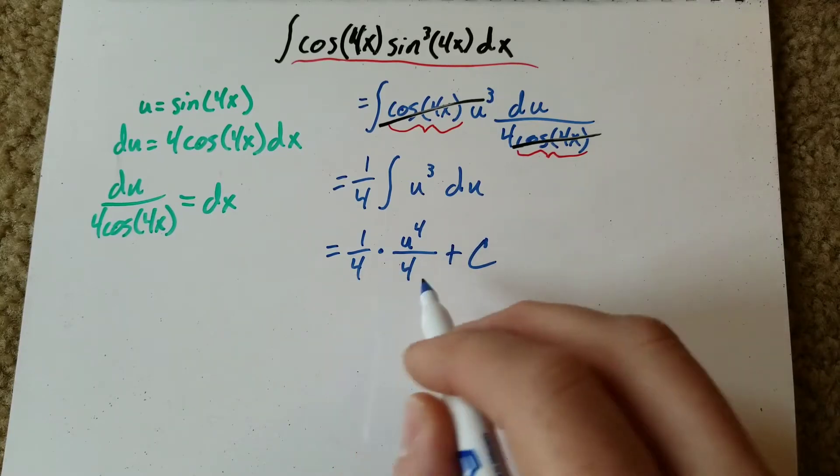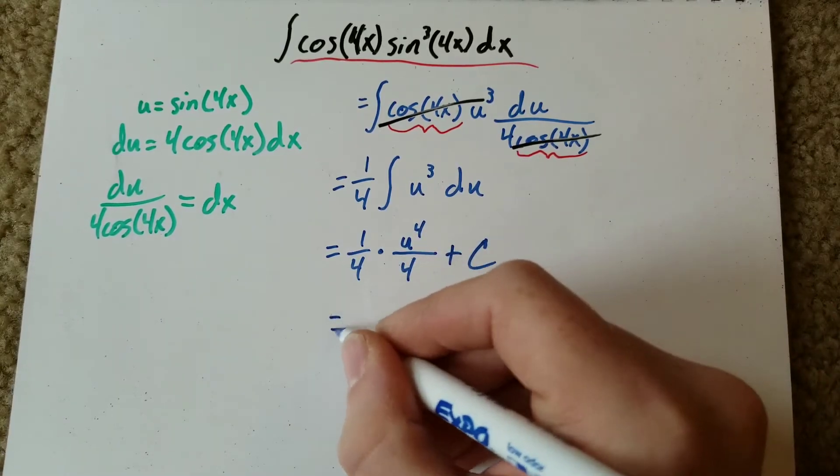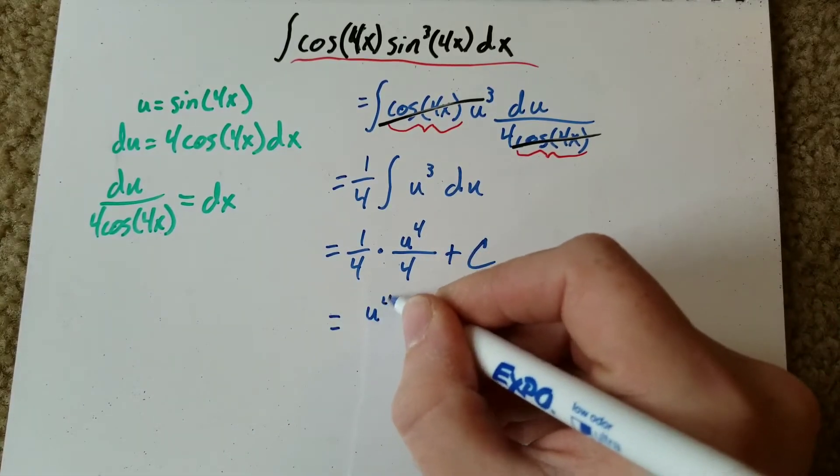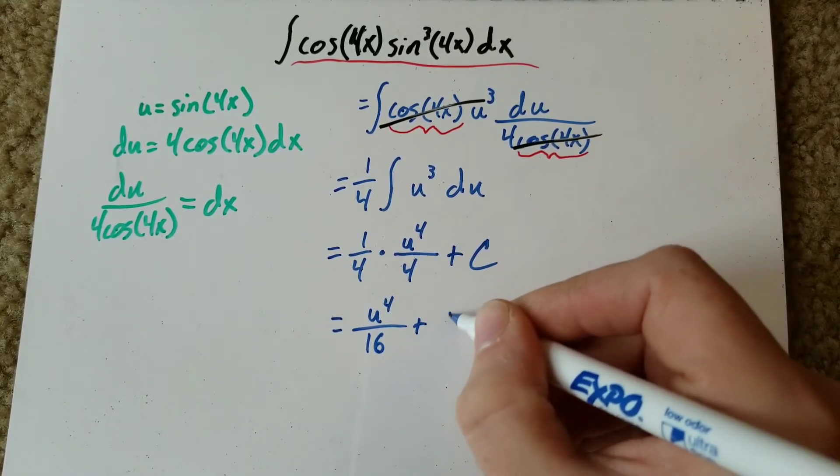Okay, now we can combine these two, multiply them together. We've got u to the 4th over 16 plus C.